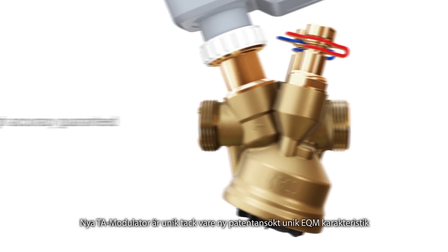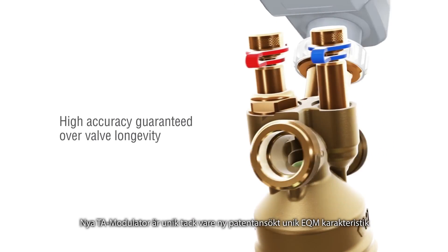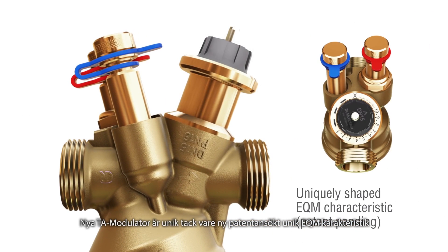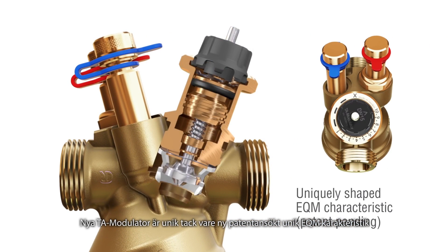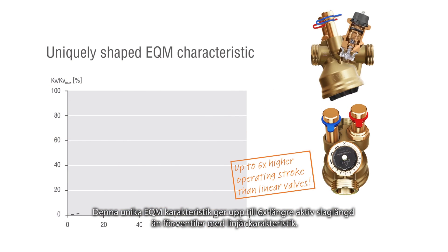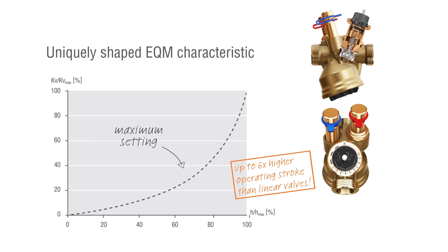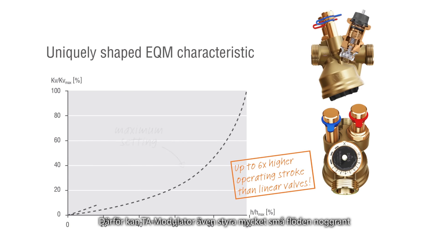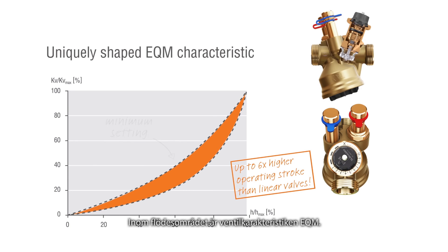The new highly precise TA Modulator is unique due to its new patent-pending uniquely shaped EQM characteristic. Its uniquely shaped profile provides an up to six times higher operating stroke than linear valves. Therefore, TA Modulator is able to precisely control also very small flows. The new characteristic remains equal percentage within the range of maximum and minimum flow settings.